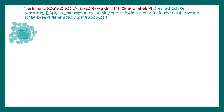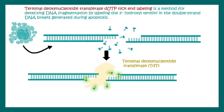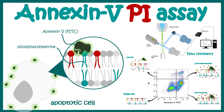Another technique is the TUNEL assay — Terminal deoxynucleotidyl Transferase dUTP Nick End Labeling. This is based on the fact that apoptotic cells have fragmented DNA. The enzyme TdT transferase incorporates labeled dUTP into these fragmented DNA ends, marking the DNA of apoptotic cells. The fluorescent signal indicates significant amounts of broken DNA in a cell, suggesting the cell is undergoing apoptosis.